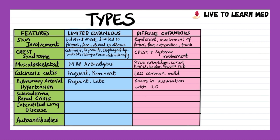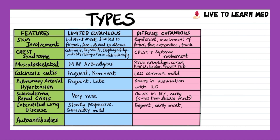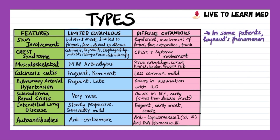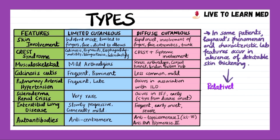Pulmonary arterial hypertension is a frequent and late manifestation in the limited cutaneous type, whereas in the diffuse type it occurs in association with interstitial lung disease. Scleroderma renal crisis is rare in the limited type but occurs early, less than four years from disease onset, in the diffuse type. Interstitial lung disease is generally mild and slowly progressive in the limited type, whereas it is frequent, severe, and has an early onset in the diffuse type. Anti-centromere antibodies are seen in the limited type, while anti-topoisomerase 1 and anti-RNA polymerase 3 are seen in the diffuse type. A relatively benign subset where Raynaud's phenomenon and characteristic lab features occur without detectable skin thickening is termed systemic sclerosis sine scleroderma.